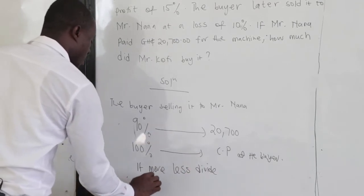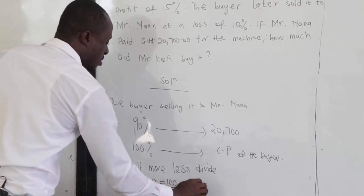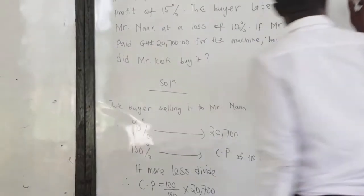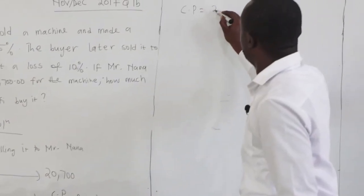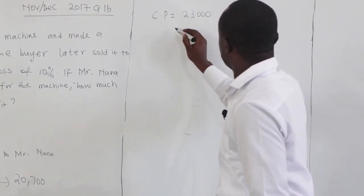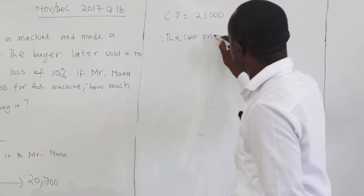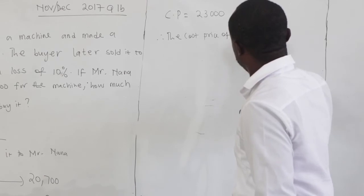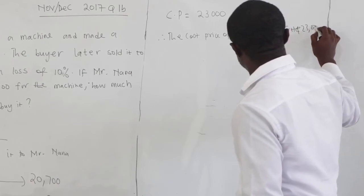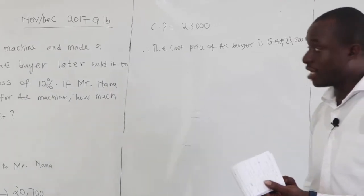Therefore our cost price will be 100 over 90 times 20,700. When you compute this, the cost price will be 23,000. Therefore the cost price of the buyer is 23,000. Don't forget to bring the decimal point — 23,000.00.